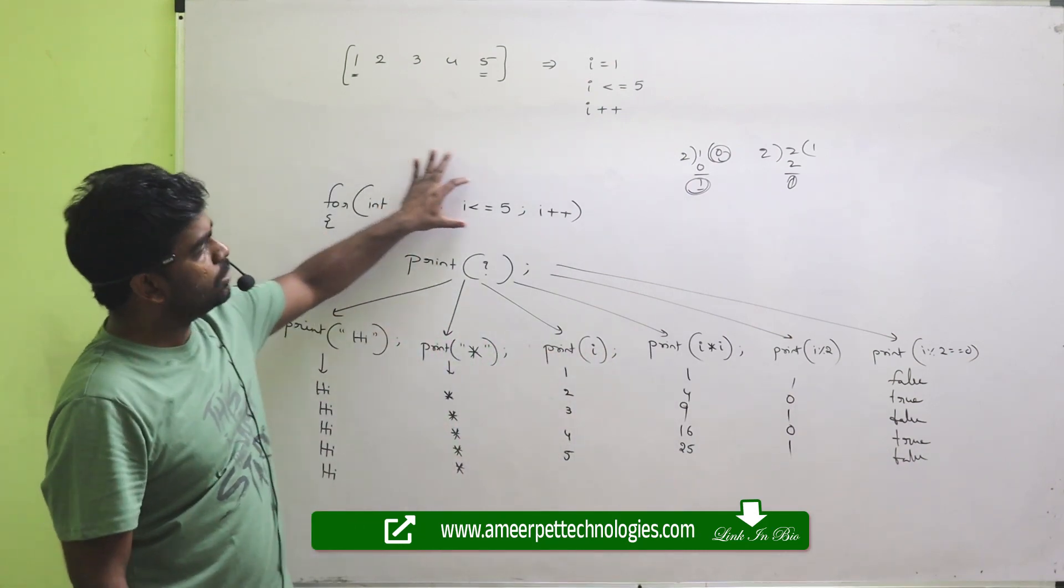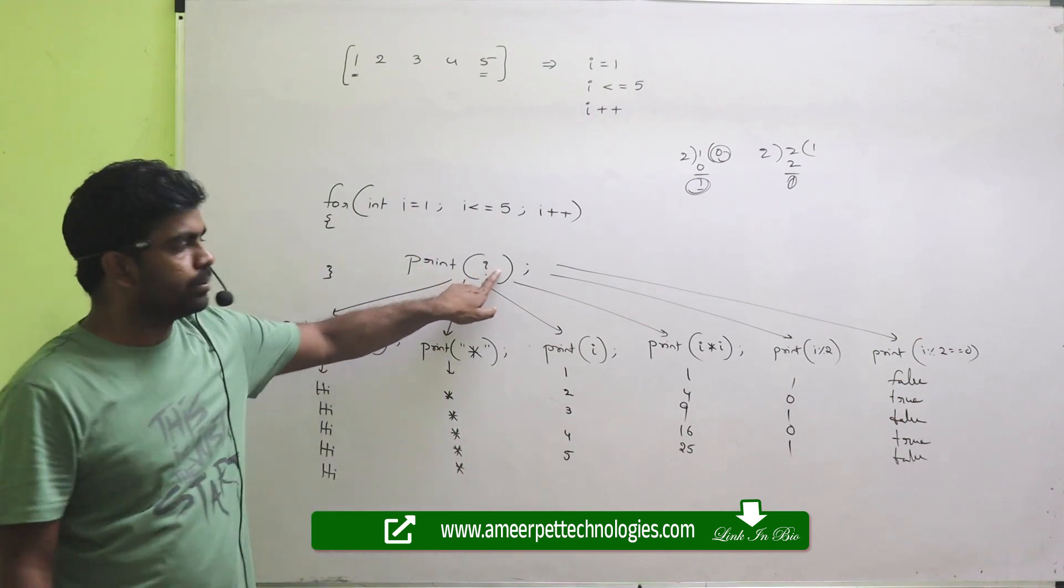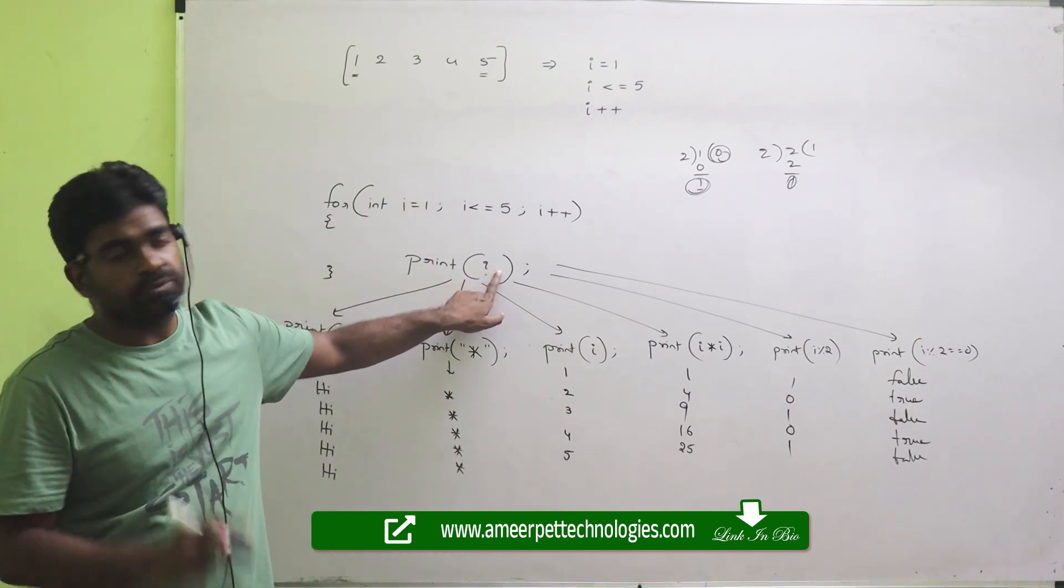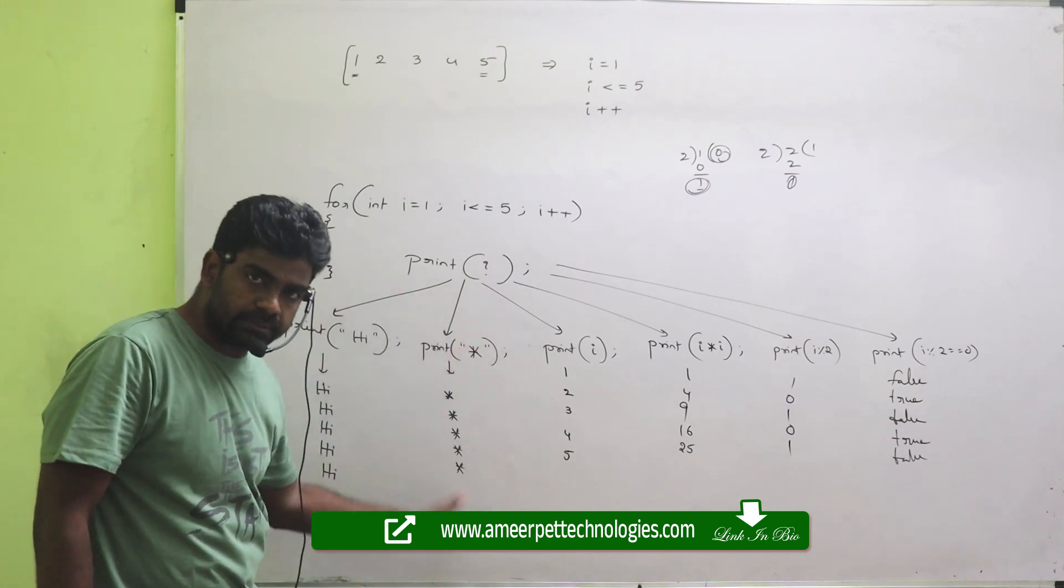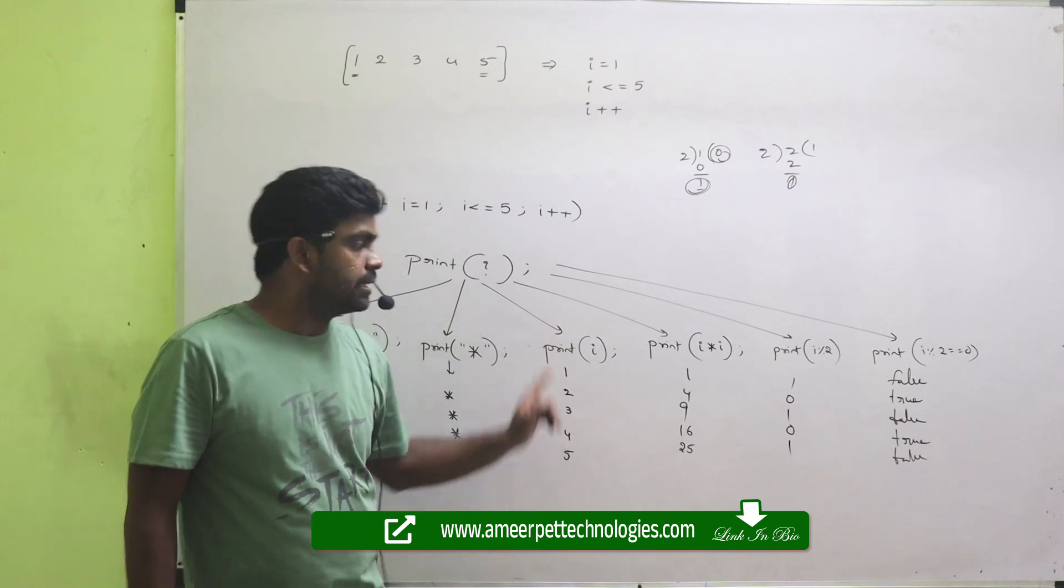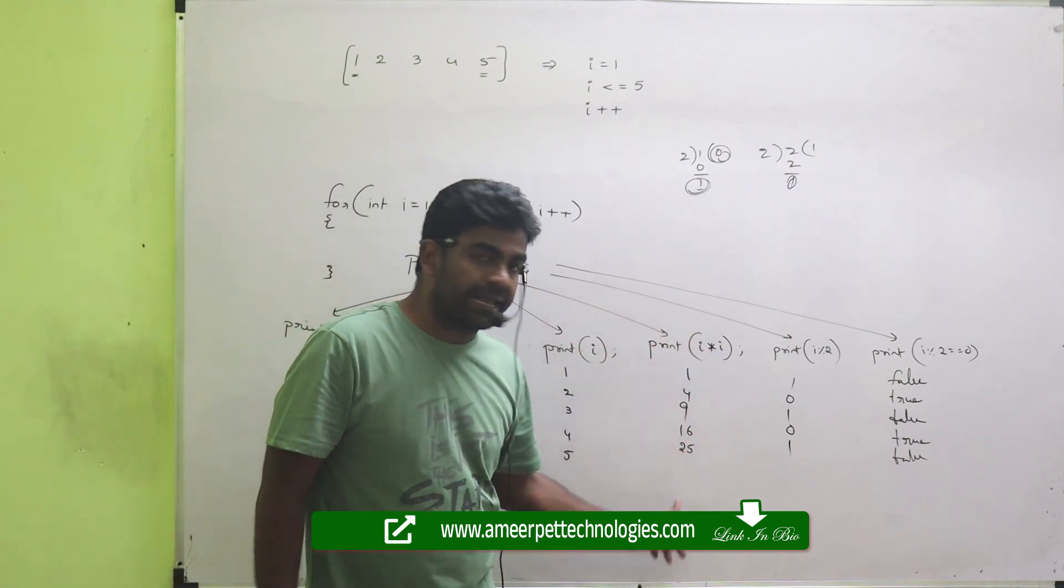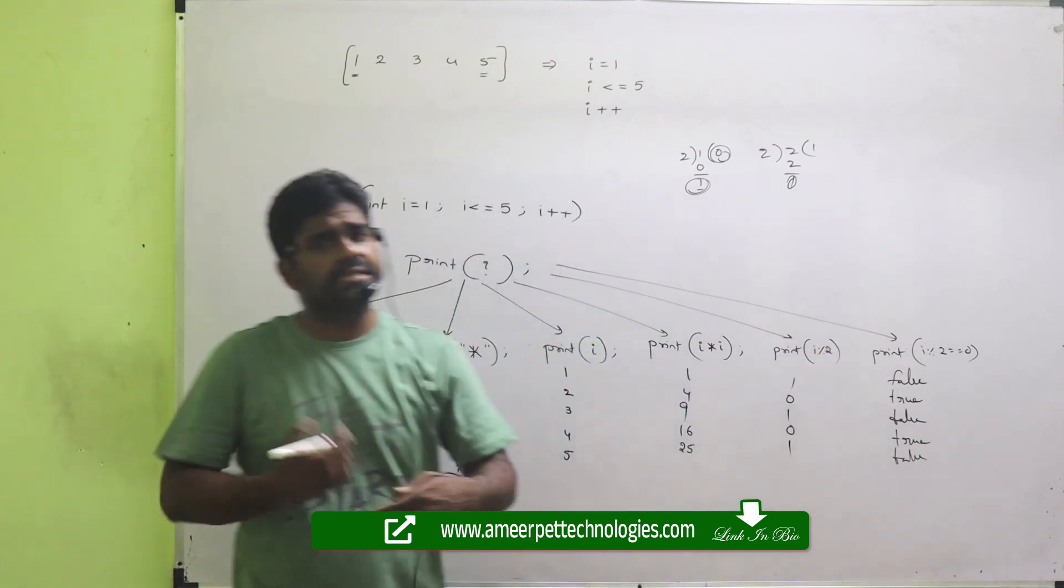How many times you are repeating the loop? 5 times. But inside what you are printing always matters. What you are printing? High, 5 times high. Star, 5 times star. I, it's 1, 2, 3, 4, 5. I into I, 1, 4, 9, 16, 25. Like that all values will display. In the same way.